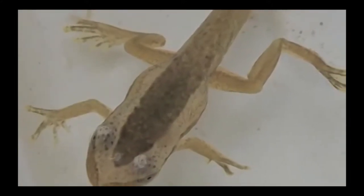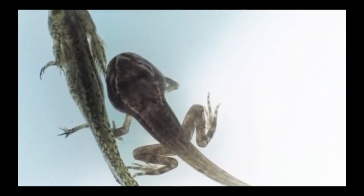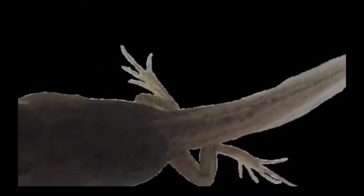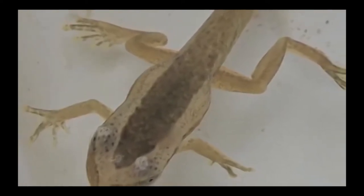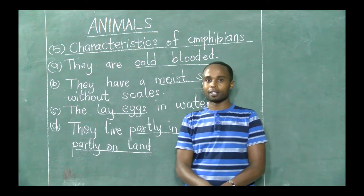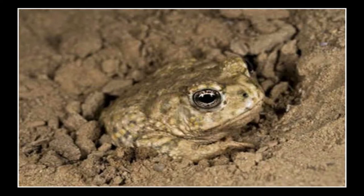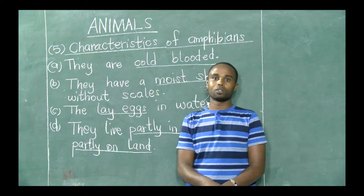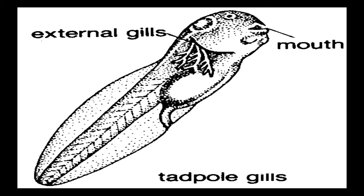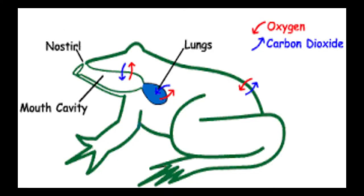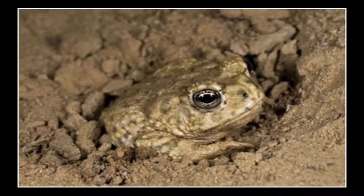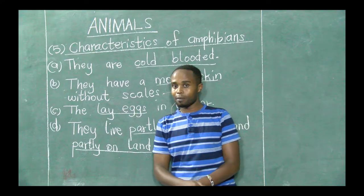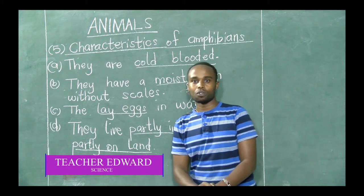When they mature, they start breathing using their lungs, just like mammals, birds, and reptiles. Some of them also hibernate in the soil, and when they are in the soil, they breathe through their moist skin. So amphibians, when young, live in water and breathe through gills. When they mature, they breathe through their lungs. And sometimes, when they hide in the soil, they breathe through their moist skin. Don't forget that — sometimes you can be asked this as a question.